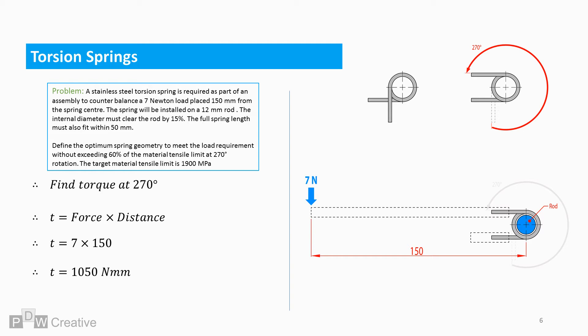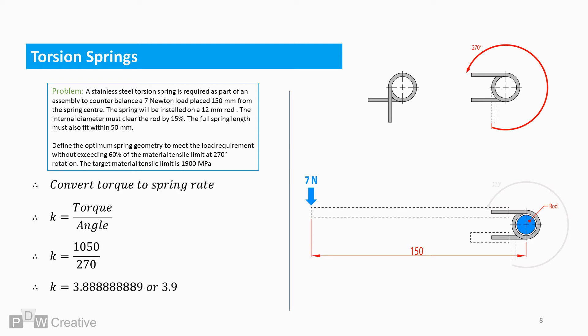We can use this to define the spring stiffness. The stiffness, or rate, is torque over the loaded angle of rotation. So, 1050 over 270 is 3.9.